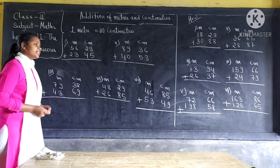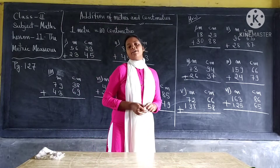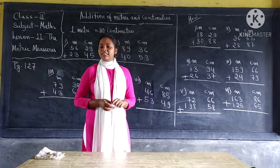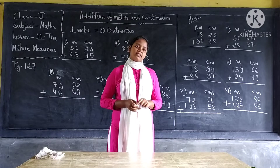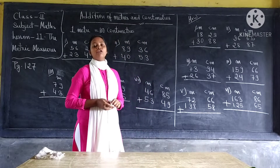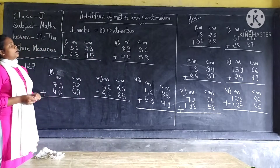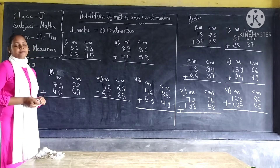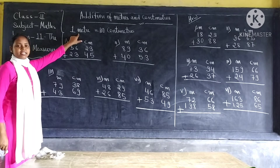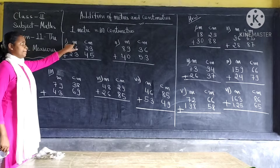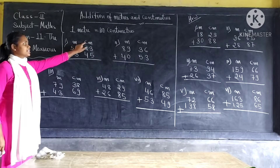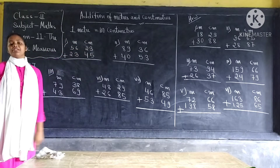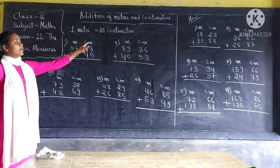Any object, if you want to know the length of things like trees, or the length of the benches or the desks or anything, if we are going to measure the length of any object, we use meter or centimeter. These are the two units to measure the length of an object. The short form of meter is M and the short form of centimeter is CM. Remember that one meter is equal to one hundred centimeters.